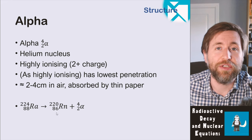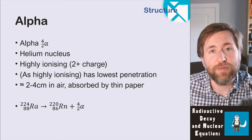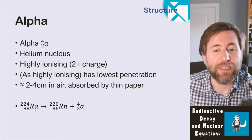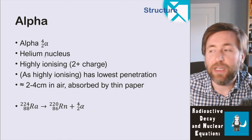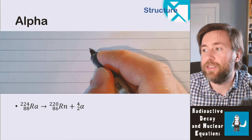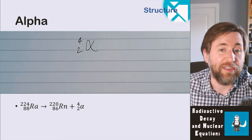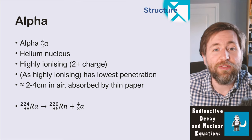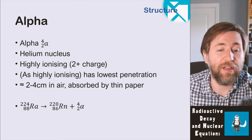Here's an example of a nuclear equation. What you can see is radium decaying into radon and kicking out an alpha particle. You need to memorize the notation for an alpha particle: a mass of four and a proton number of two. It has the Greek letter alpha, or you can write He for a helium nucleus. An alpha particle is two protons and two neutrons. In this equation, just like a chemical equation, we have before and after the decay.